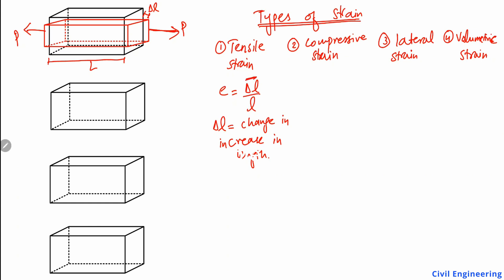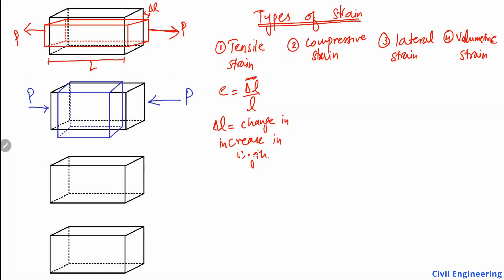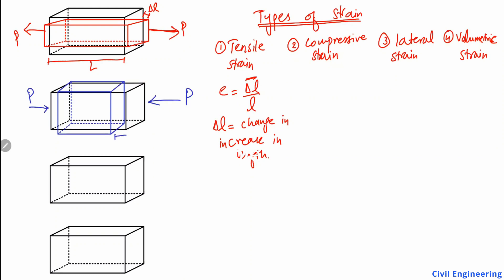The compressive strain is opposite to tensile strain. If I apply a compressive load P, it compresses the object. The body decreases in length and expands in the lateral direction. The compressive strain is also defined as the change in length divided by the original length, but here the Delta L represents a decrease in length.